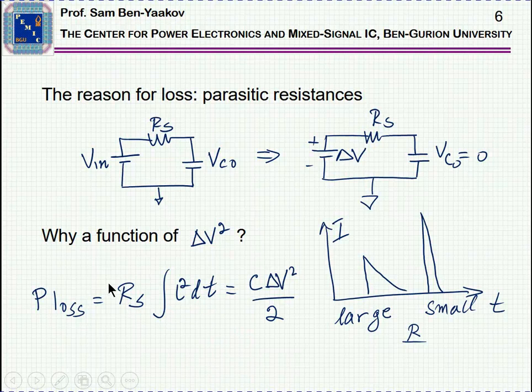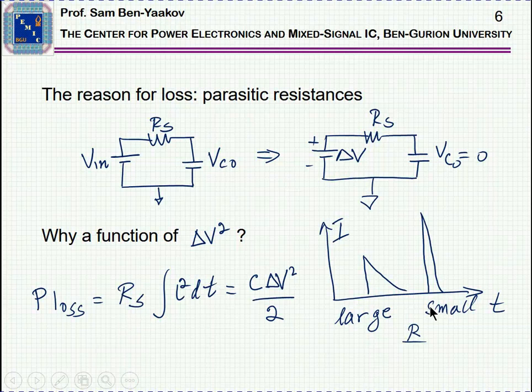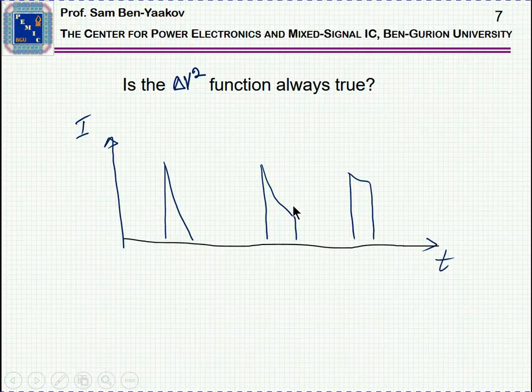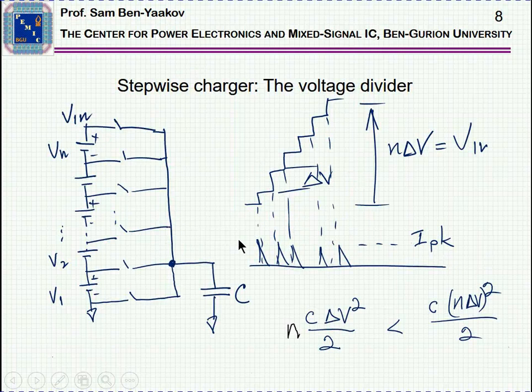As it turns out, the solution to this calculation is C delta V squared over 2. So, this expression really doesn't explain what are the losses, or what's the reason for the losses, but rather the final solution that shows that the losses will be a function of delta V. It is really interesting that this solution is independent on the value of RS. If RS is very small, the current will be very high, and still, you'll have the same equation. However, if the shape of the current is not a complete discharge, as shown here, but rather a partial discharge, during the on time of the switch, or like this, then this delta V square equation is incorrect, and you have to use another expression.